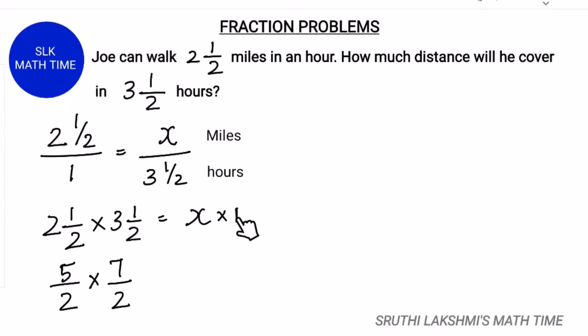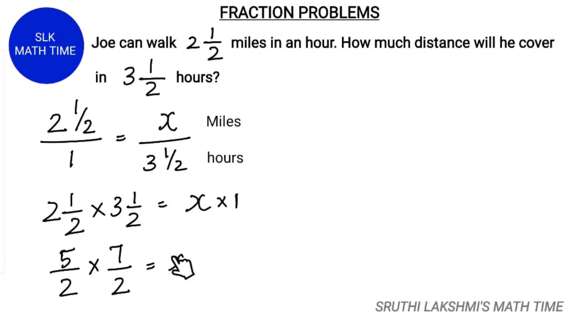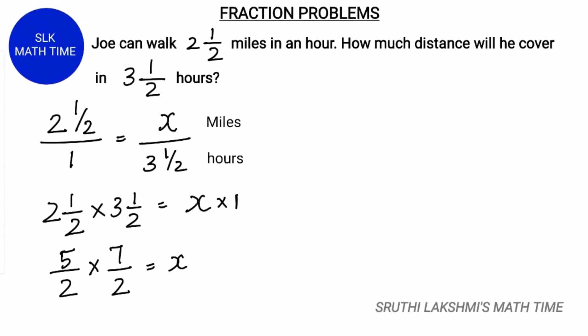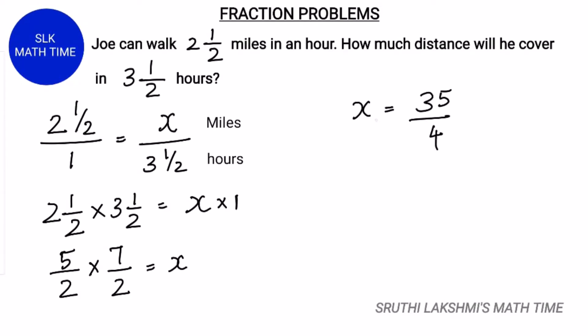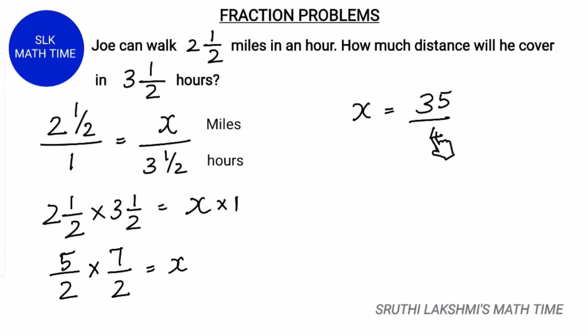So 5 by 2 into 7 by 2 equals x times 1, which is nothing but x. So 5 into 7 is 35 and 2 into 2 is 4. So x equals 35 by 4.